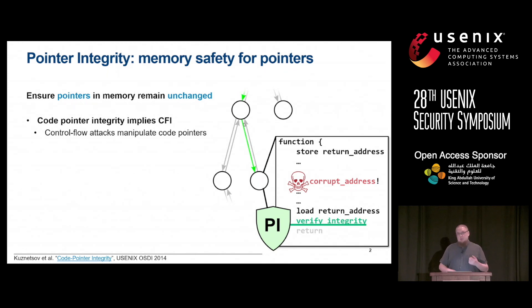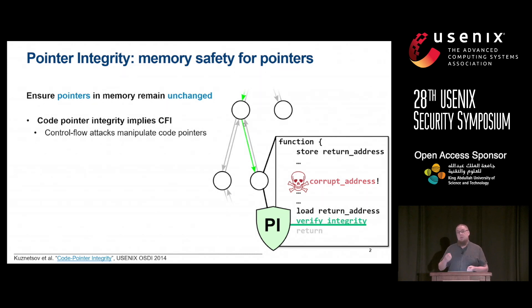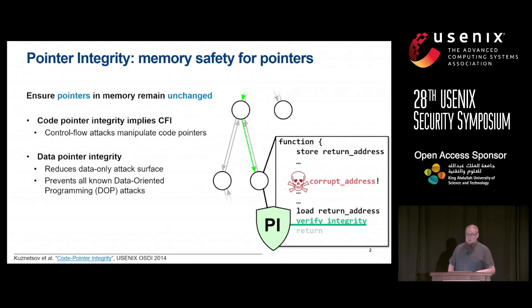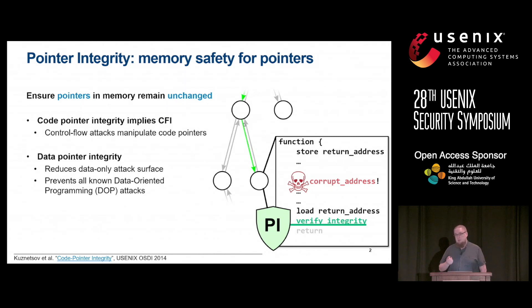If we consider control flow integrity more generally, the same would apply to code pointers, which would be used to implement indirect function calls. If you can guarantee their integrity, then these types of attacks would be prevented. The same applies for data pointers — by guaranteeing data pointer integrity, we can greatly reduce the attack surface.